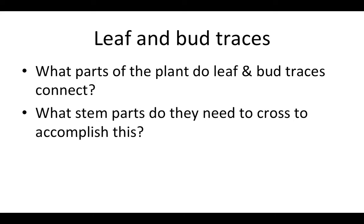The vascular bundles go up near the middle of the stem and never reach the edges; however, leaves are going to be connected to the edges of the stem. Your reading talks about the role of leaf and bud traces — what they connect within the plant and what parts of the stem are crossed to accomplish this, so make sure you get that information from your reading.